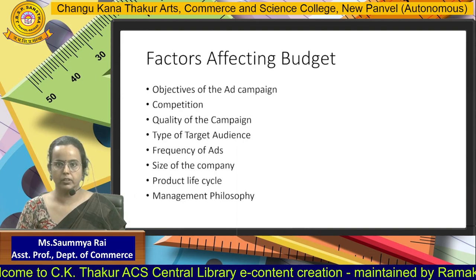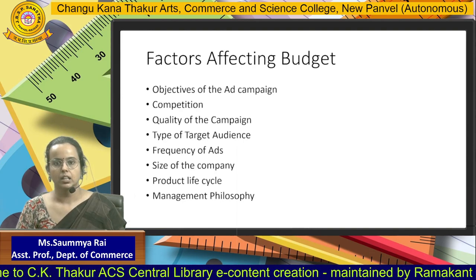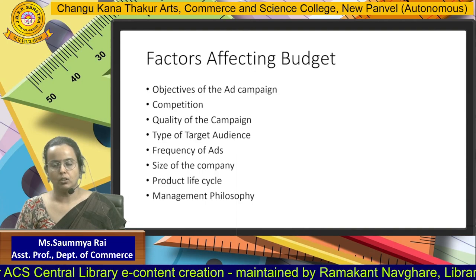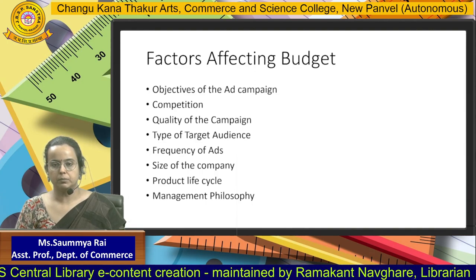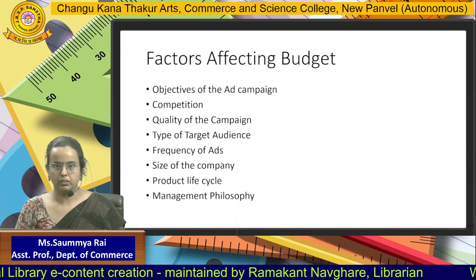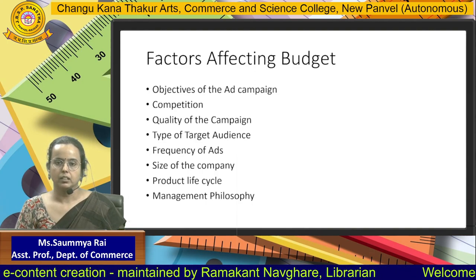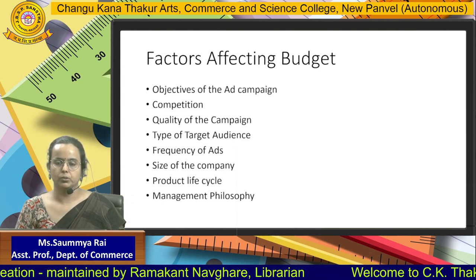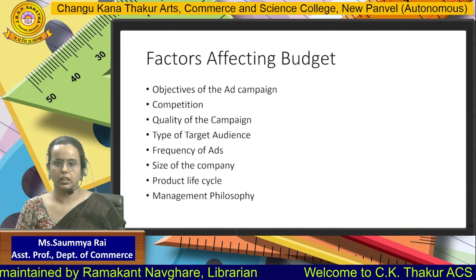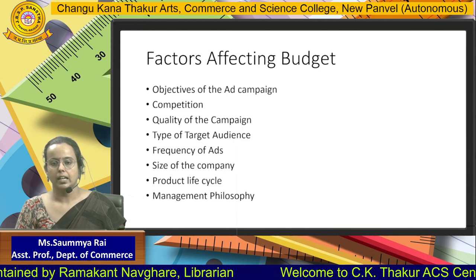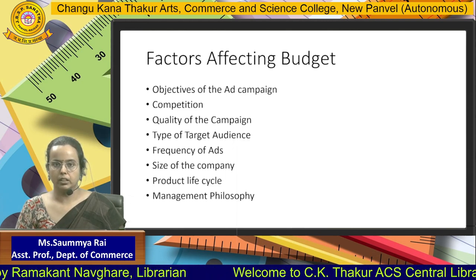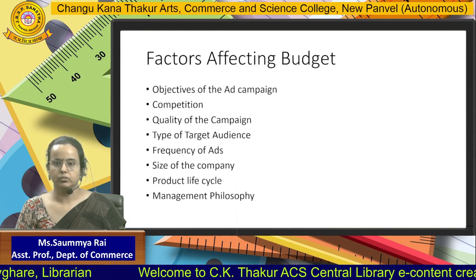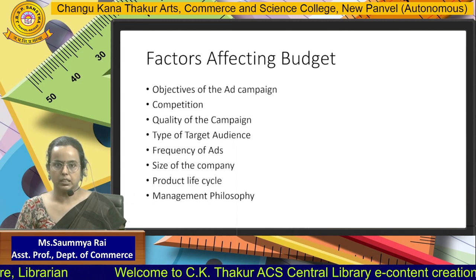Now, what are the factors affecting the budget? The first one is the objective of the campaign — what is the objective of this advertisement and what the company wants to achieve through it. Whether they want to expand their target audience, introduce a new product, launch new products, or introduce a new flavor. Whatever the objective is, that is the first part of the budgeting.